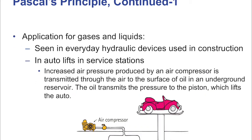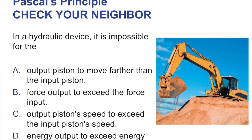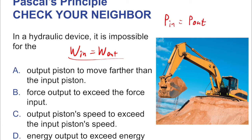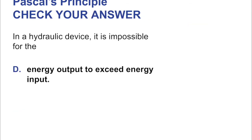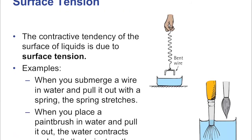Applications in everyday hydraulic devices are seen in construction — for example, a car hydraulic lift. On hydraulic devices, it is impossible to get more energy out than you put in. Work in equals work out, and pressure in equals pressure out. You're not getting force for nothing — you may have a much bigger output piston giving a much bigger force, but something had to be diminished: the distance that larger piston moved. The energy output cannot exceed the energy input.